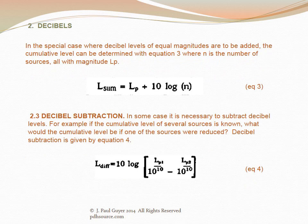When several decibel values need to be added, equation 2 should be used. In the special case where decibel levels of equal magnitudes are added, the cumulative level is L_sum = L_p + 10 × log(n), where n is the number of sources all with magnitude L_p. For subtraction, equation 4 is used — for example, if the cumulative level of several sources is known, this gives the level if one source were removed.